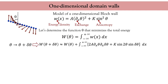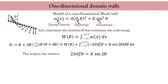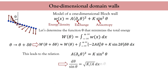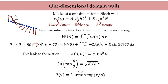We obtain an expression that we can reduce, and by canceling the integrand we arrive at a second-order differential equation on theta. Remarkably, this equation is solvable exactly. We first multiply both sides by dθ/dx, integrate, and obtain a first-order differential equation. We then separate the variables theta and x, integrate, and finally obtain the expression of the profile of the Bloch wall.